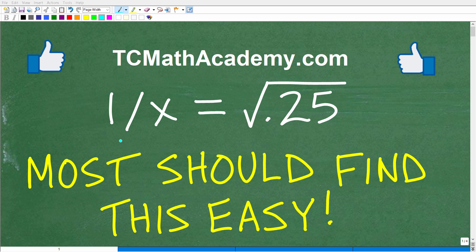Okay, so we have a basic algebra equation. The equation is 1 over x is equal to the square root of 0.25.